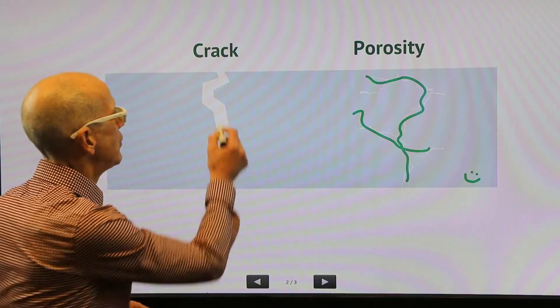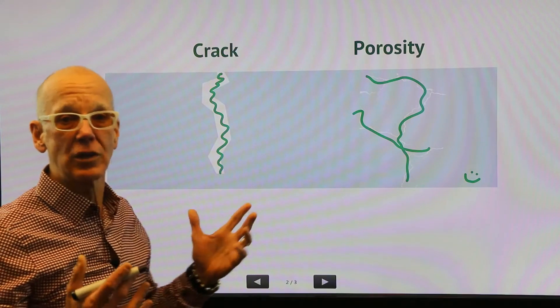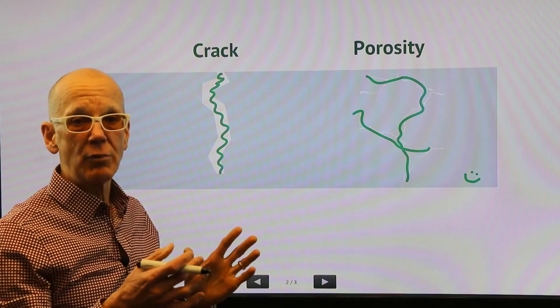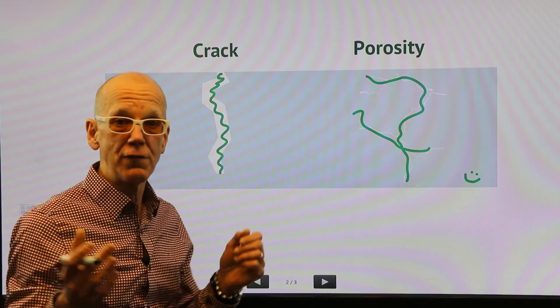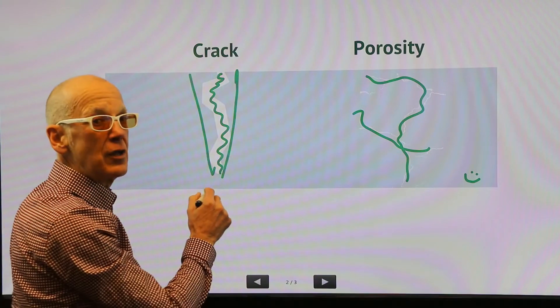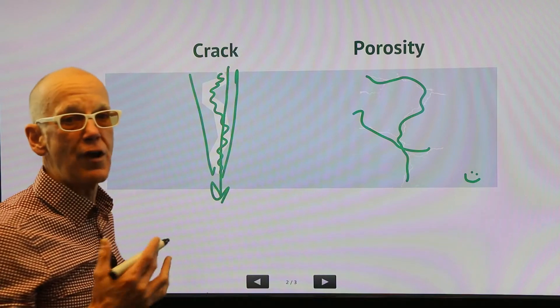And what will happen is sealant will actually seal it and it may pass leak test. But then when you go to assemble it and torque it down for assembly, or worse yet when it gets out in the field, the crack can propagate and open up again, and then that will open up the leak path so it'll fail later on.